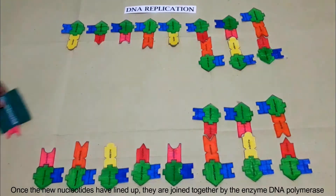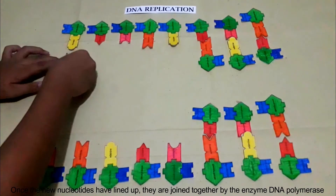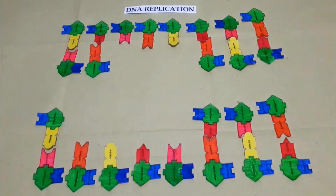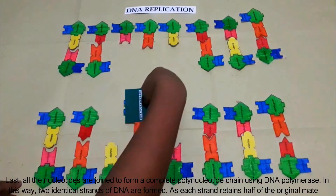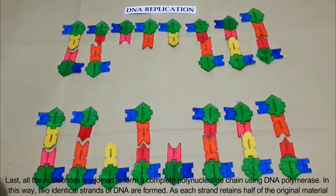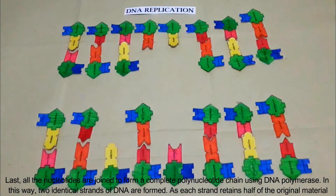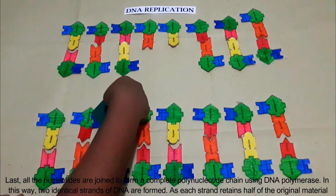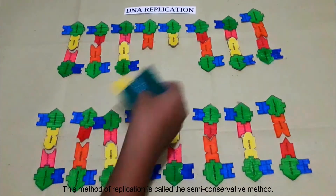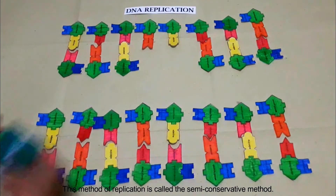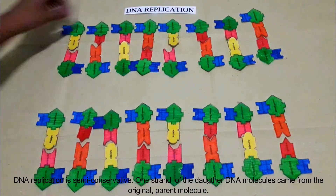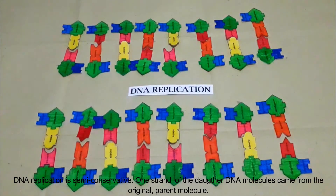Third, free nucleotides are attracted to their complementary bases. Fourth, once the new nucleotides have lined up, they are joined together by the enzyme DNA polymerase. All the nucleotides are joined to form a complete polynucleotide chain using DNA polymerase. In this way, two identical strands of DNA are formed as each strand retains half of the original material. This method is called the semi-conservative method.